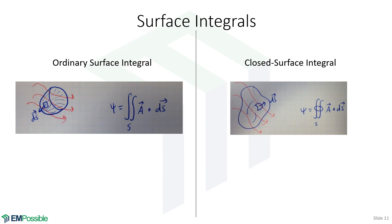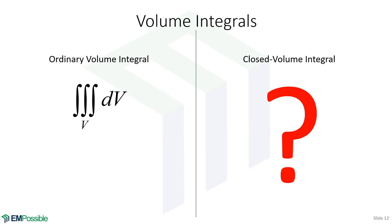Surface integrals in electromagnetics tend to be integrating a vector dot product with a differential surface. This gets the component of the vector function that is perpendicular to that surface — the concept of flux. We're integrating the flux of vector field A through that surface, or how much of that vector field punches straight through the surface. An ordinary surface integral and a closed surface integral are essentially the same mathematically, other than the closed surface integral perfectly encloses a volume. For volume integrals, one application is integrating charge density throughout a volume to get total charge.